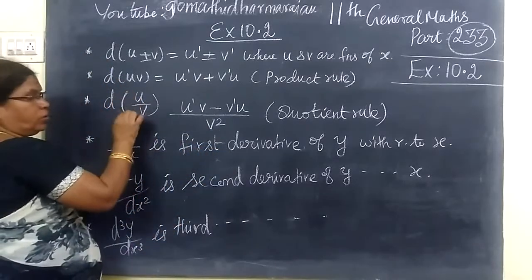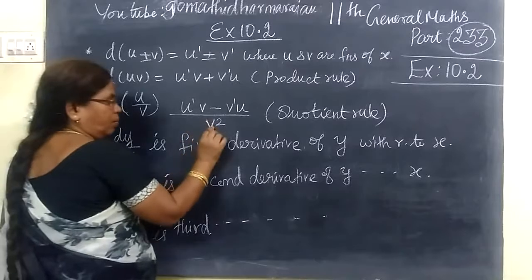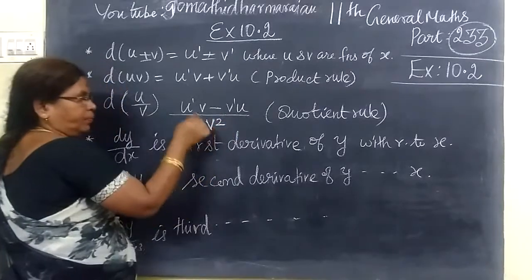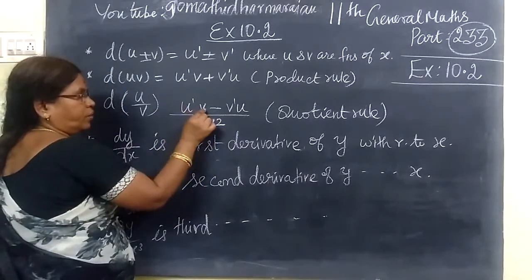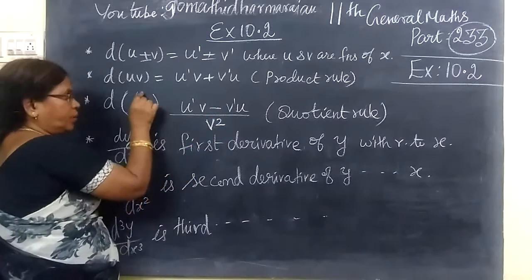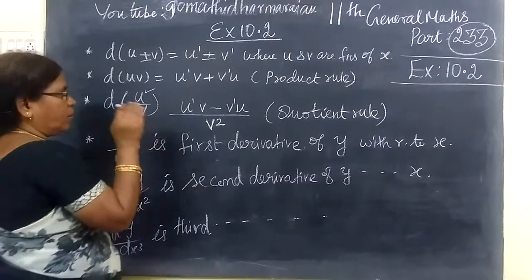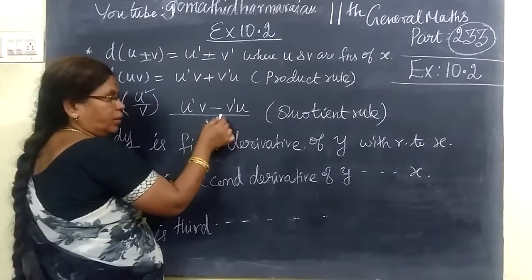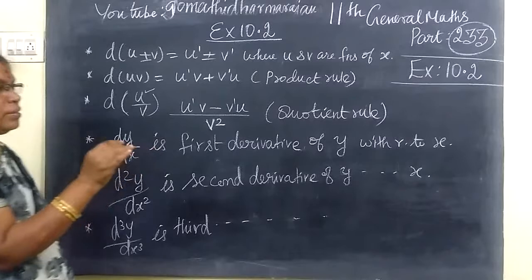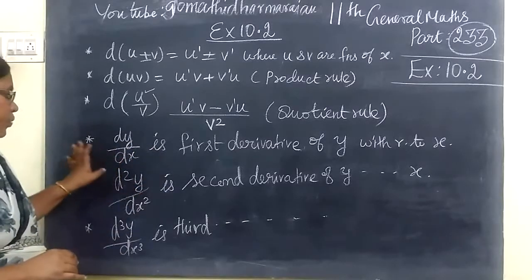This is the quotient rule. The denominator is squared. Then we are writing u'v minus vu'. You differentiate u, write v as it is, then you differentiate v, write u as it is. This is known as quotient rule.